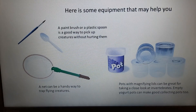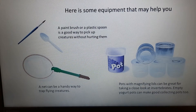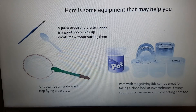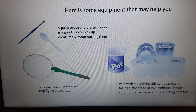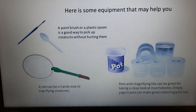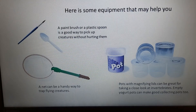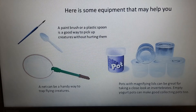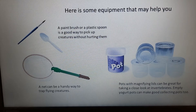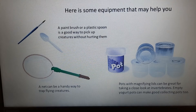Here's some equipment you may have around the house to help you. A paintbrush is good for gently picking creatures up without damaging them. A plastic spoon is another option, or similar small implements. If you have a net, you might be able to trap flying creatures, or shake a tree branch so creatures fall out and can be caught.